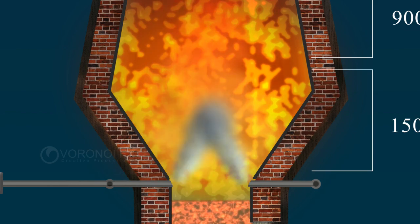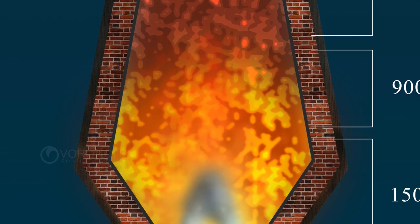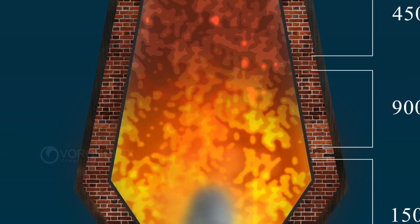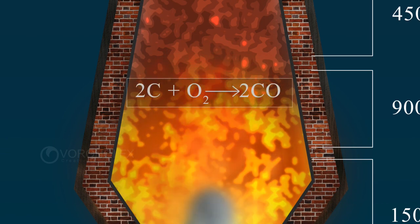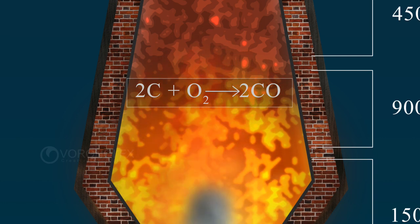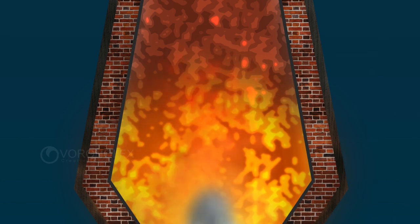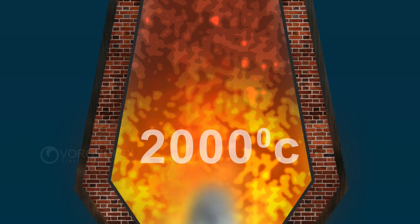During the flow of hot air from bottom to top, coke combines with oxygen in the air to form carbon monoxide: 2C on reaction with O2 forms 2CO. Due to this reaction, a large amount of heat is released and thus the temperature of the blast furnace increases to 2000 degrees Celsius.